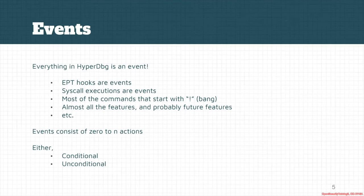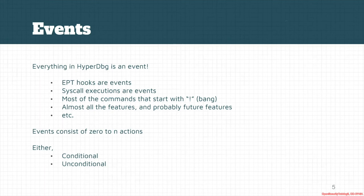Everything in HyperDbg is an event. Every incident that happens in your system is an event. For example, a breakpoint is an event, EPT hooks are events, syscall hooks are also events, and most of the commands that start with an exclamation mark or bang — almost all of them — are events. Probably future features are also based on events. Events might consist of zero to an unlimited number of actions, and these events are either conditional or unconditional.